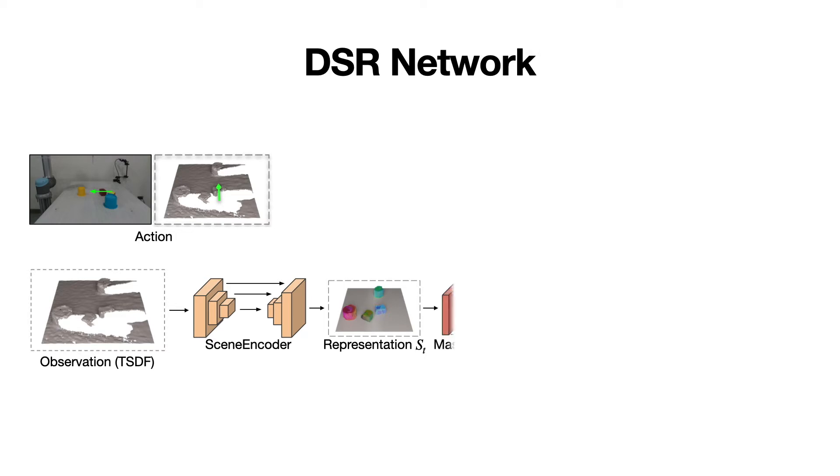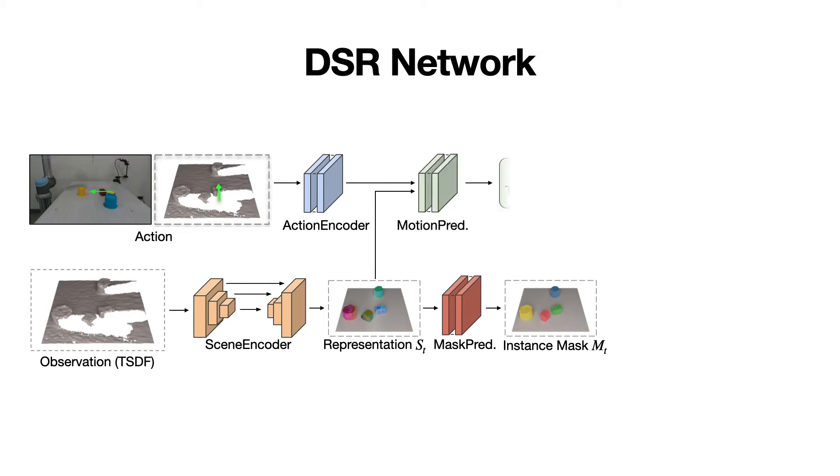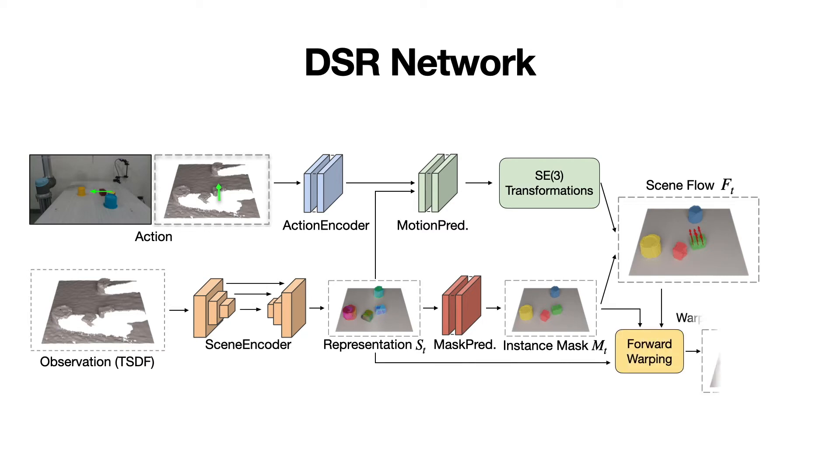which is then used to predict an amodal object instance mask. In parallel, the action encoder encodes the input action, and the motion predictor predicts object motion represented as the SE3 transform. The scene flow is computed by combining the instance mask and the transformations. The warped scene representation is used as the history in the next step.